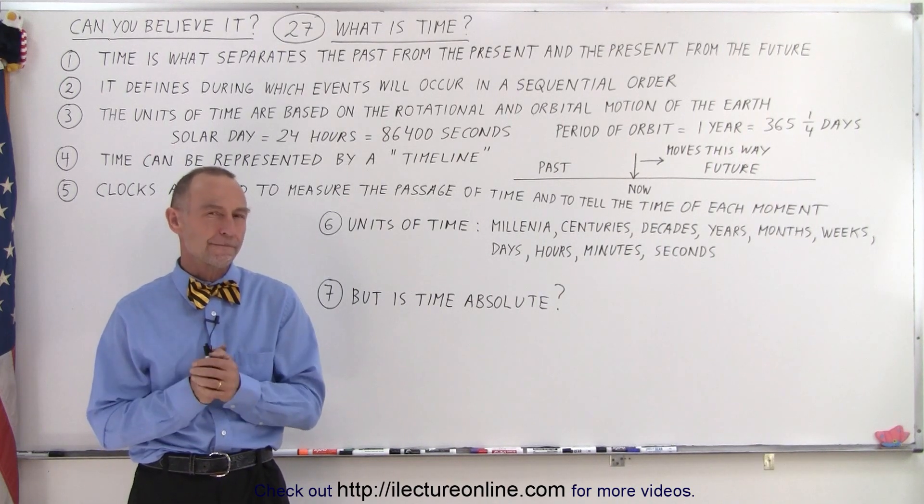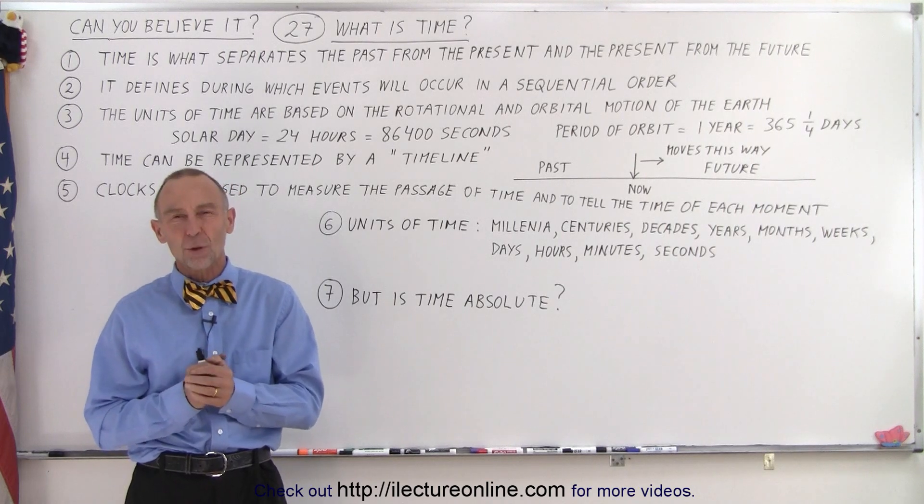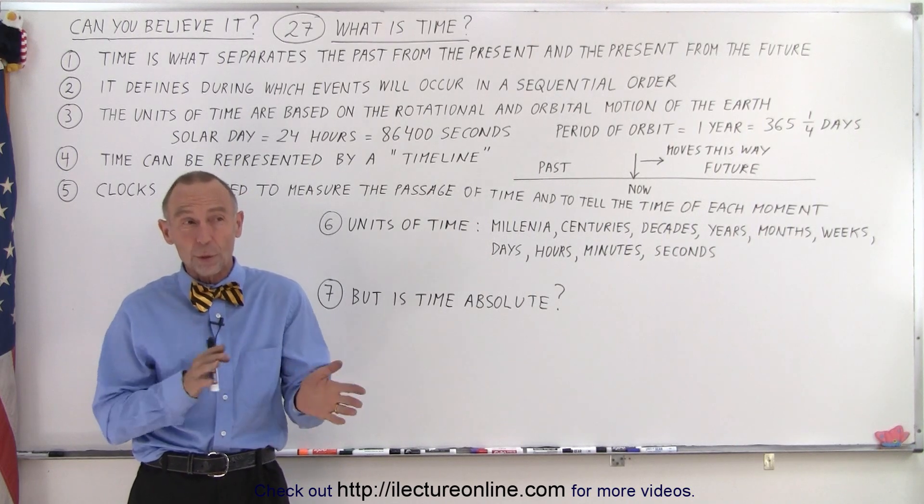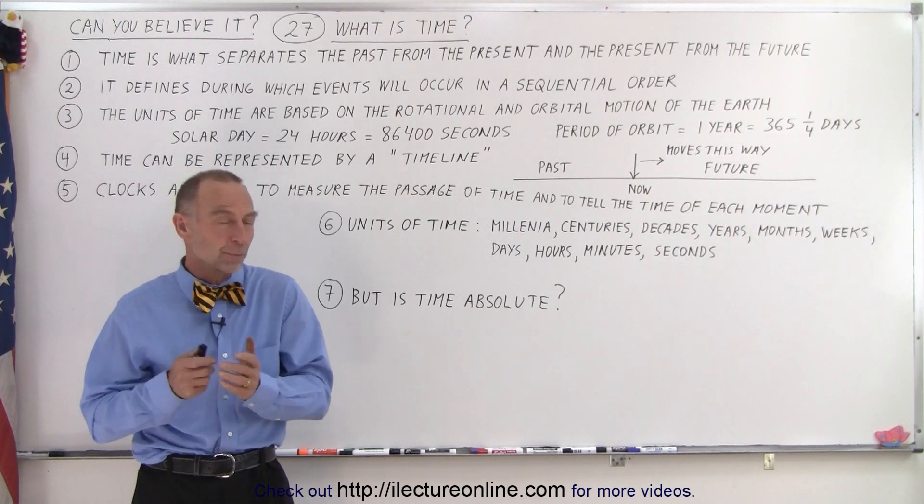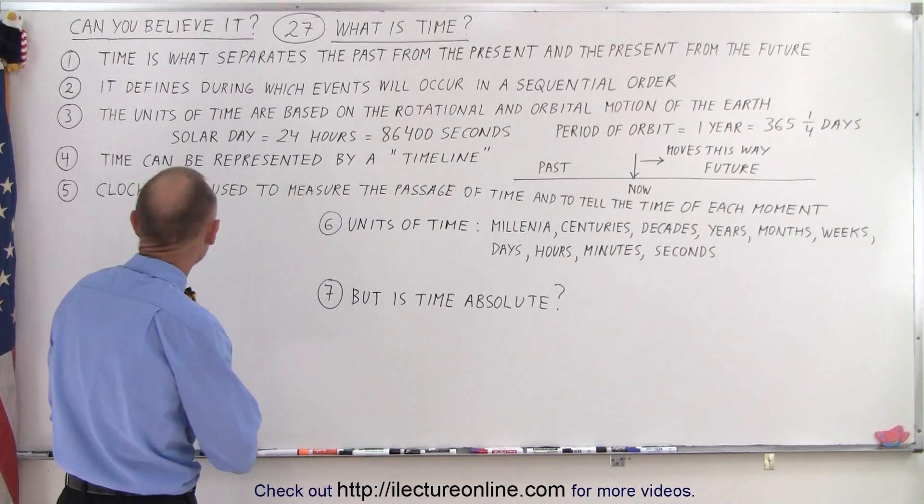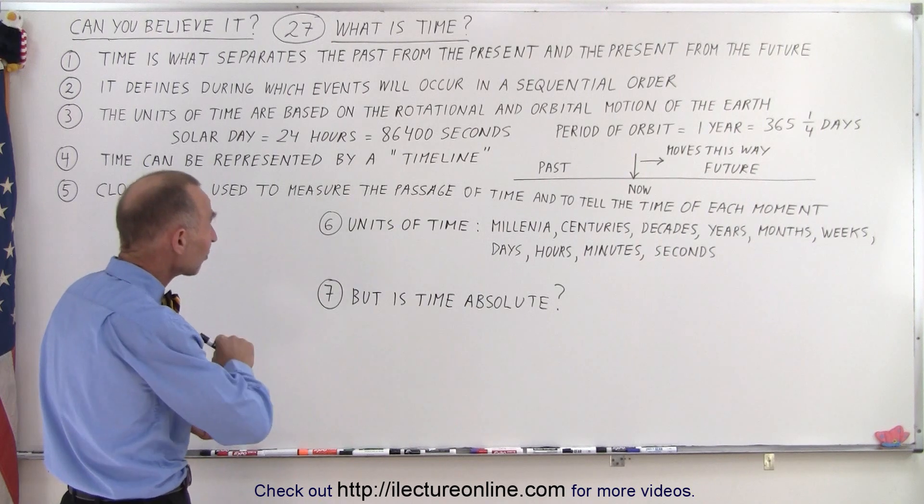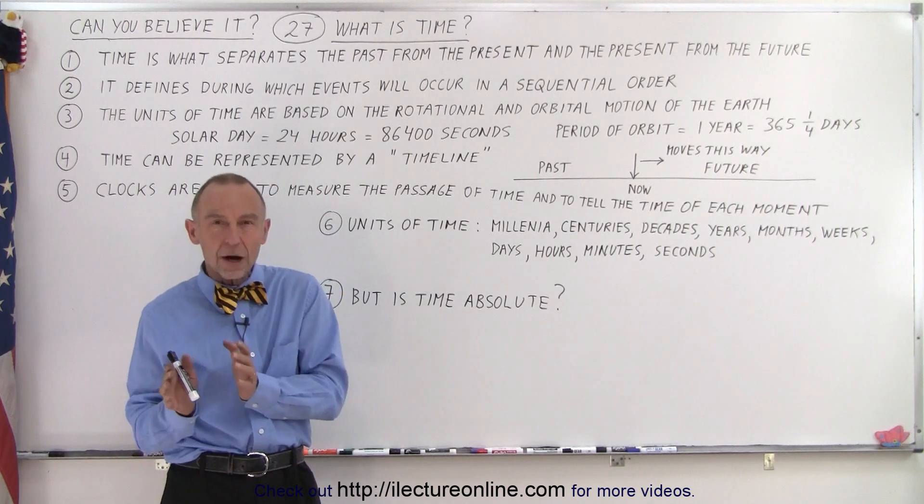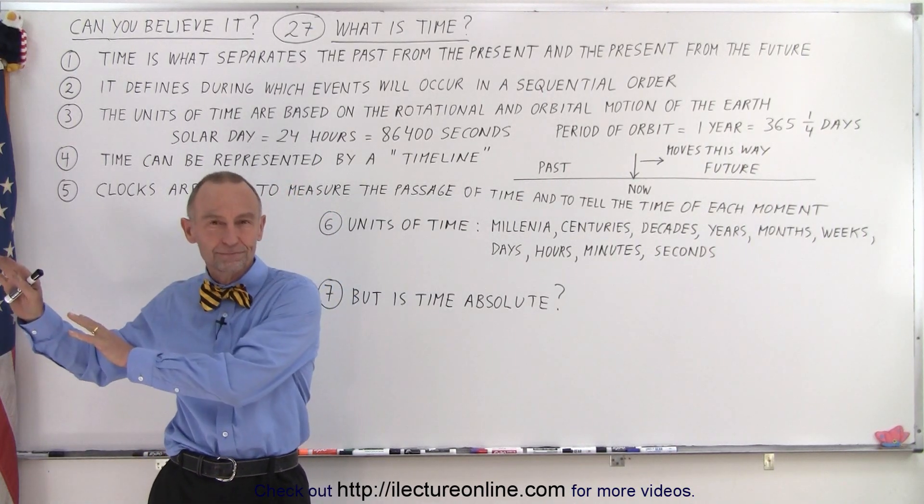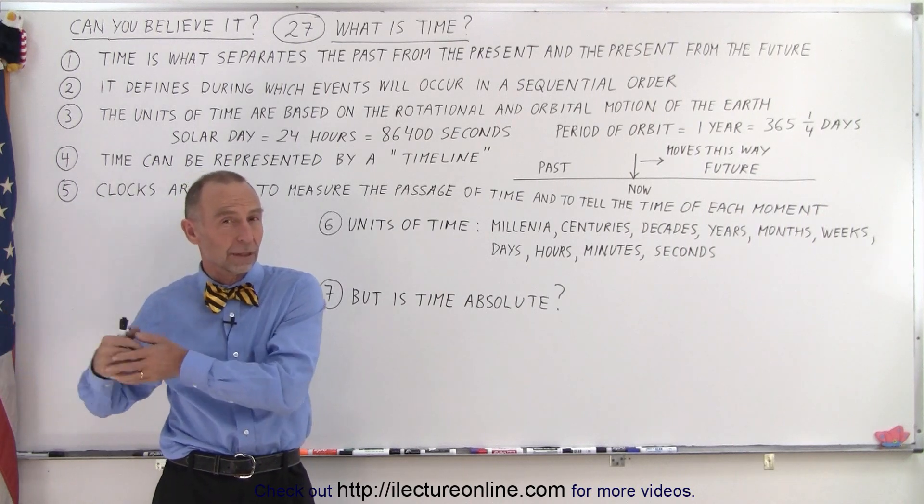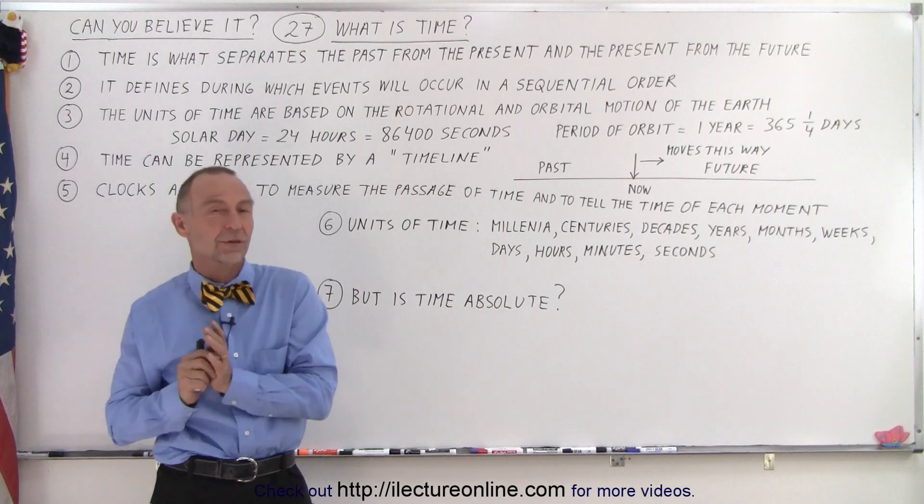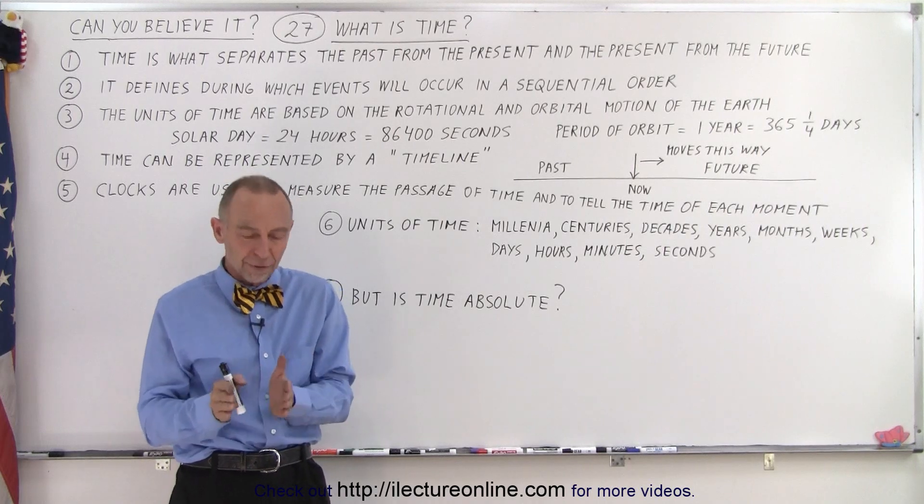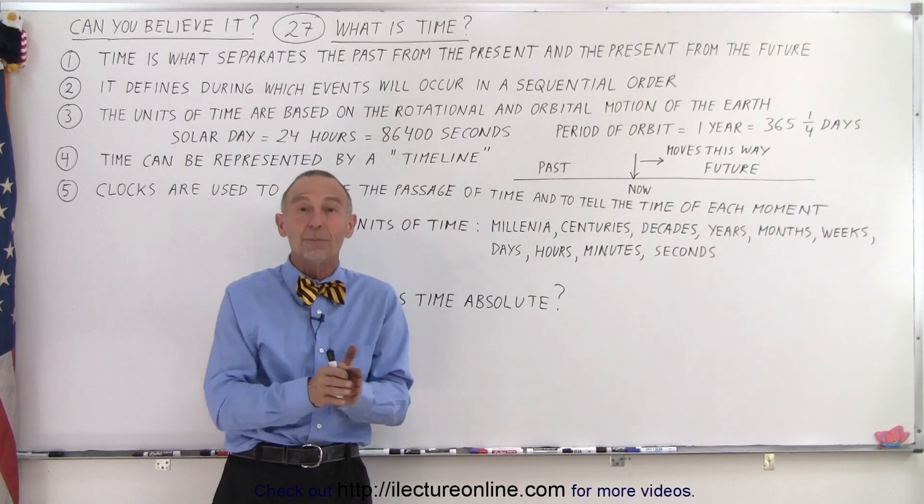What is time? Time seems to be this strange thing and it's hard to define. Time is what separates the past from the present and the present from the future. It gives us a way of separating things that happened in the past that we experienced, that we cannot go back and re-experience. That is done, that's in the past. We are now currently in the present. Every moment is a new moment, a little bit further in time than the moment before.